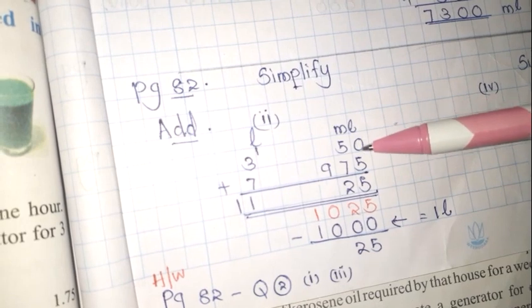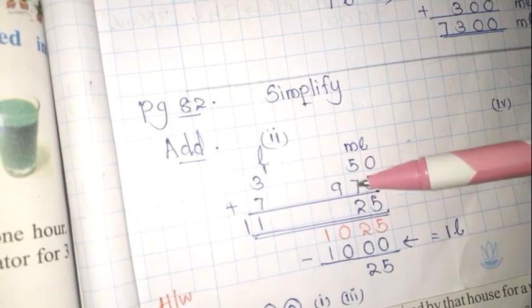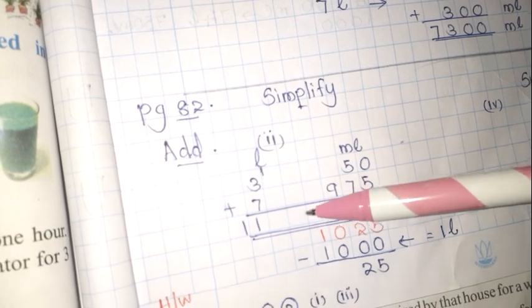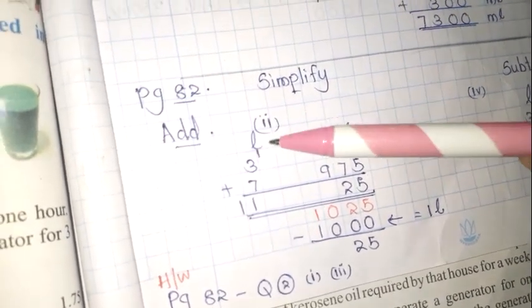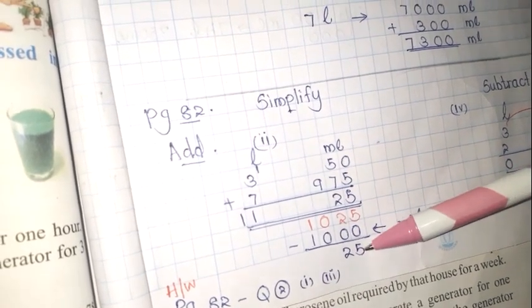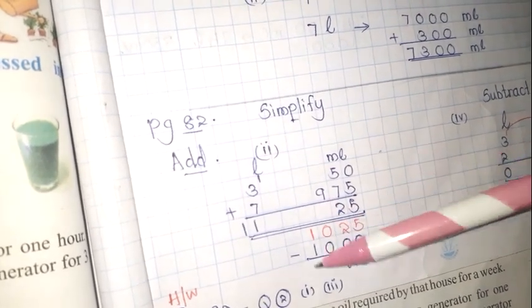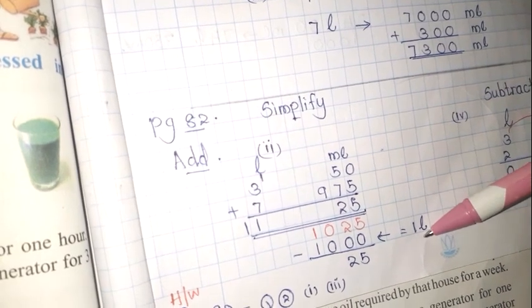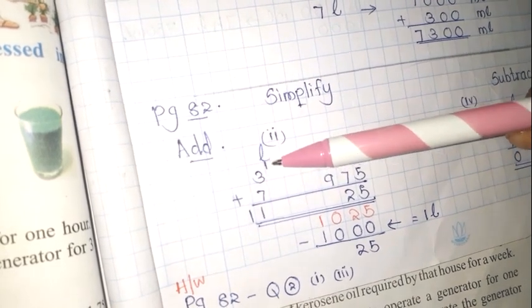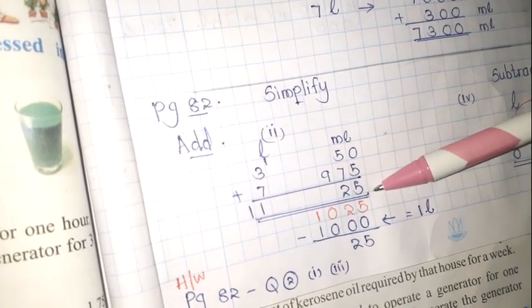First, you add the millilitres: 50 + 975 = 1025 millilitres. You can't write 1025 millilitres, because 1 litre equals 1000 millilitres. So subtract 1000 — you get 25, which you write in the millilitres column. That 1000 millilitres equals 1 litre, which you carry to the litres column. Then 7 + 3 = 10, plus 1 carried = 11. So the answer is 11 litres and 25 millilitres.